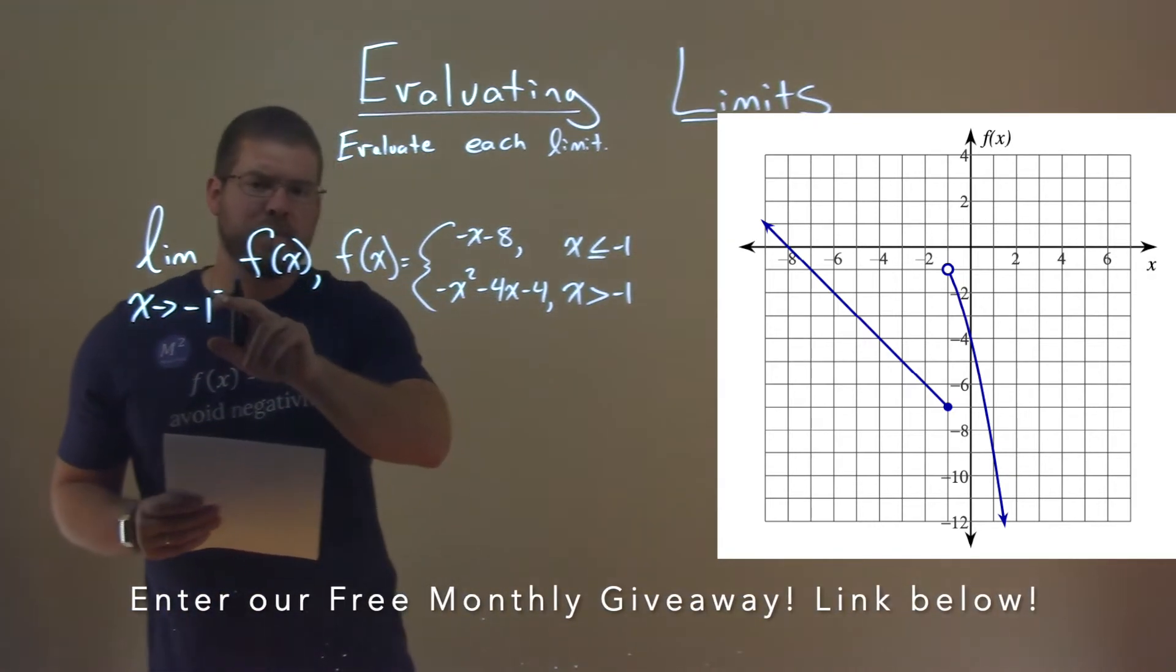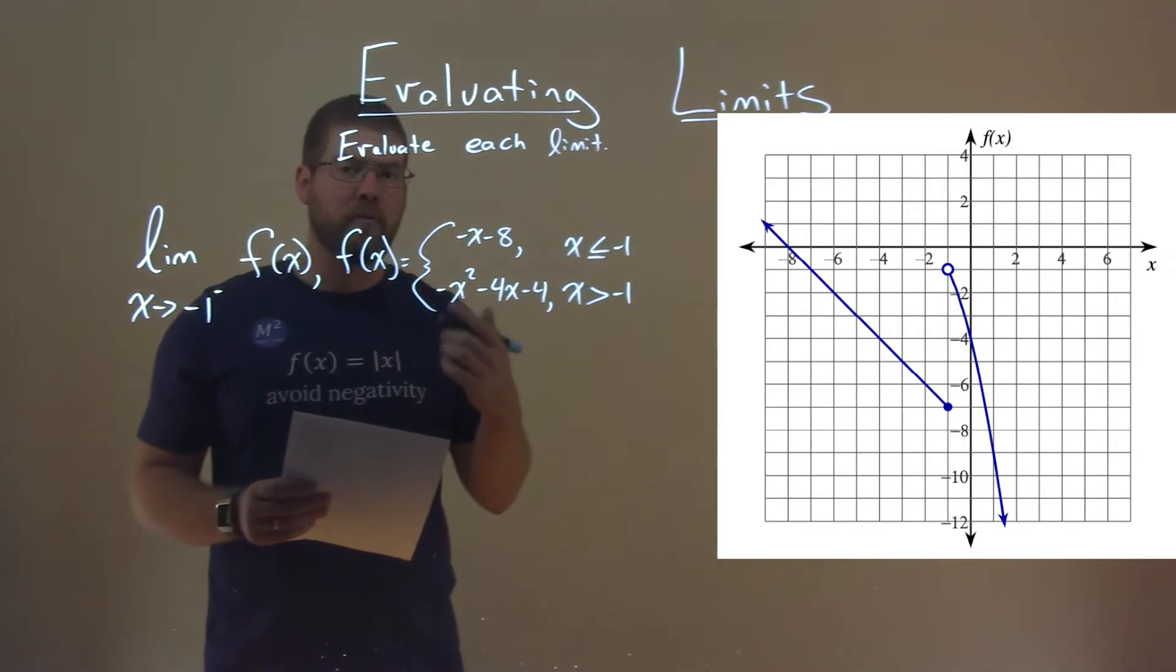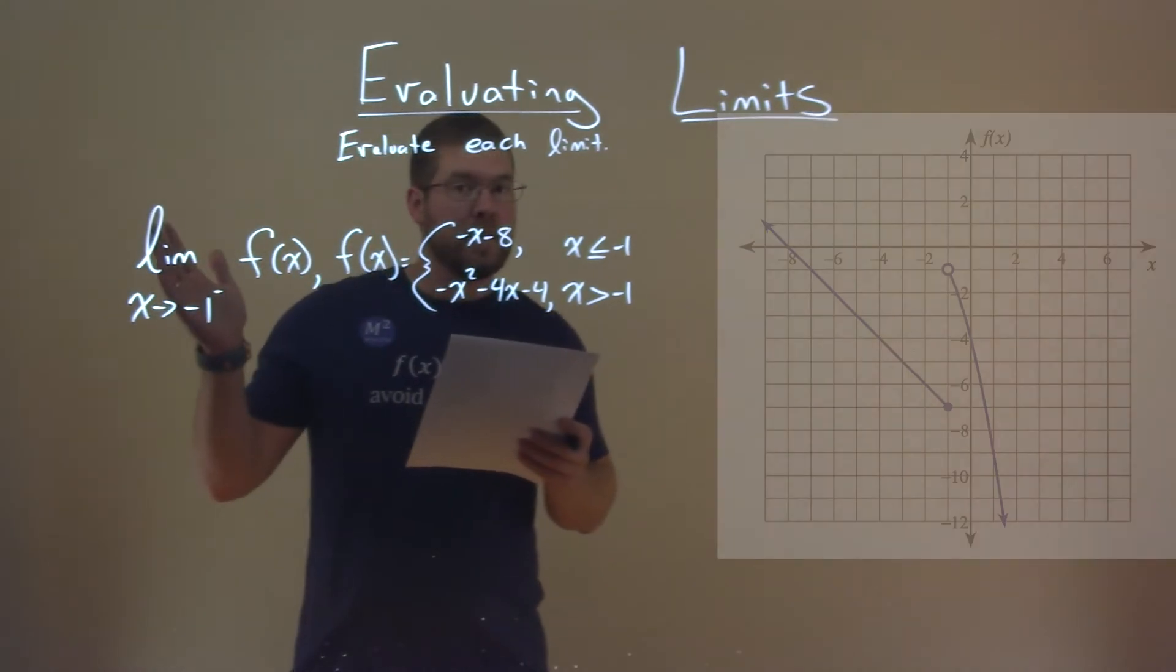And that comes right here, with the negative up top as almost like an exponent. That means we're approaching negative 1 from the left. So we look at our graph there, and we're approaching it from the left.